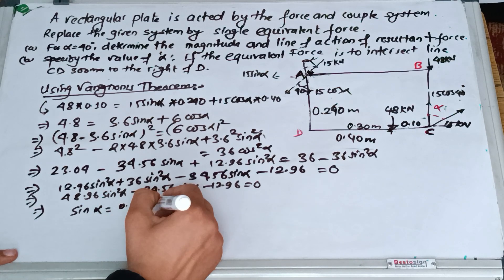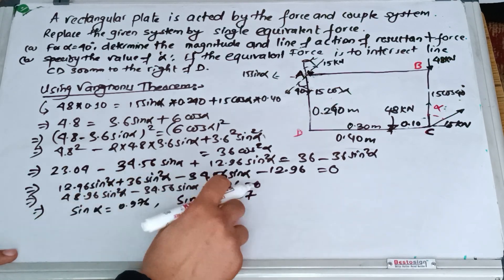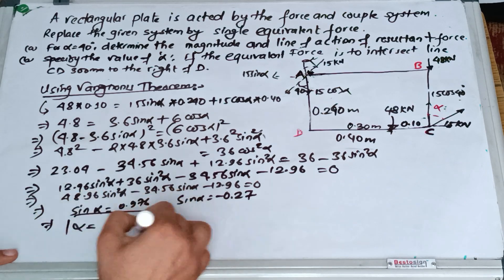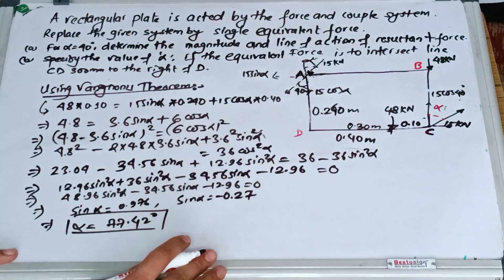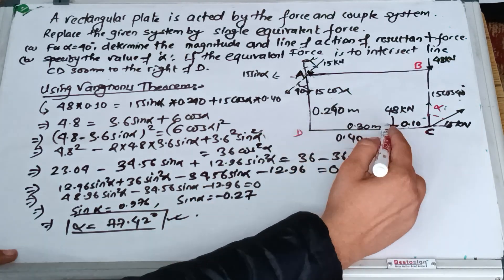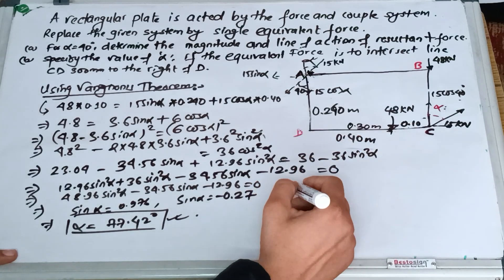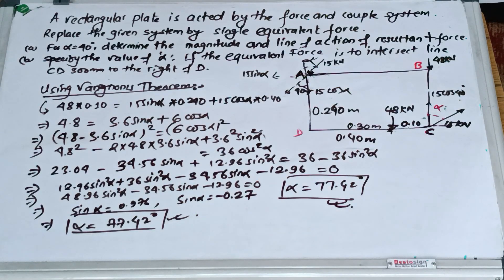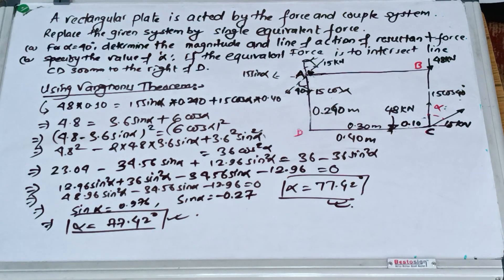Solving the quadratic gives sin alpha equals 0.976 or sin alpha equals negative 0.27. Taking the positive value, alpha equals 77.42 degrees. This is the way you can solve this type of force-couple system and determine the equivalent force and line of action of the resultant force with respect to a certain point. Thank you so much for your time. Please like and share — it motivates us to bring more tutorials and conceptual problems in engineering mechanics. If you have any queries, comment below. Have a good day!